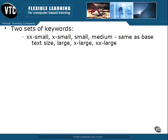The second keyword set that we have is a relative keyword set: larger or smaller. These keywords are going to change the inherited size. So with the larger and smaller keywords, we're going to increase or decrease the size of our inherited font. Sometimes it's a good idea to use these relative keywords rather than trying to set our size, because we may just want to have that particular section one size smaller or one size larger than what the surrounding text is.